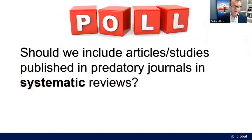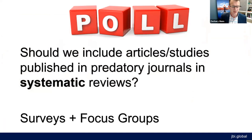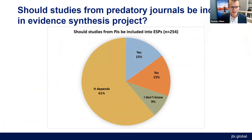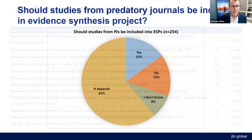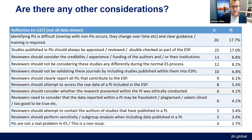One of the big questions we've asked through different means is: should we include articles from predatory journals in systematic reviews? We've done surveys and focus groups, and what we get is a lot of diverse opinion and not a lot of certainty. About 15% say yes, 15% say no, the majority say it depends, and some say they don't know. The reasons are varied — ranging from 'predatory journals aren't actually an issue' to 'we should never include any studies from predatory journals' to 'what we currently do with risk of bias is more than enough already.'